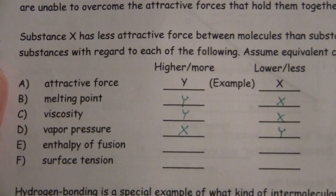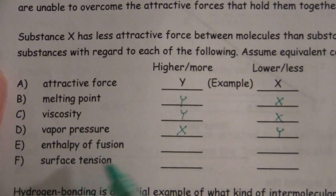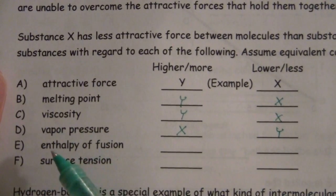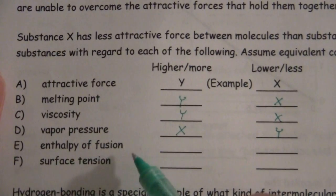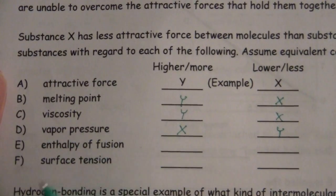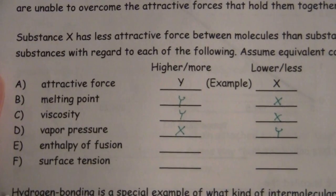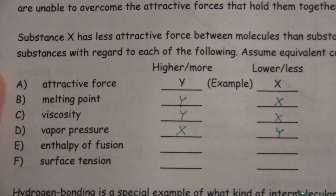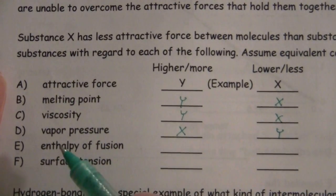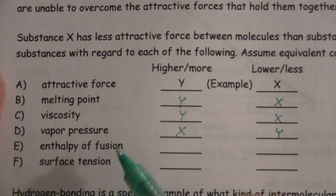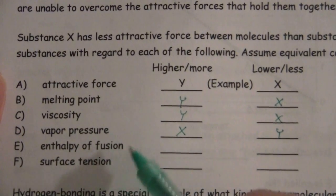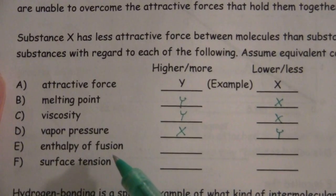Enthalpy of fusion, that is another word, another way of saying this, that's the heat of melting. Fusion is the process of going from solid to liquid. The enthalpy of fusion, that's the amount of heat required to melt it in other words.